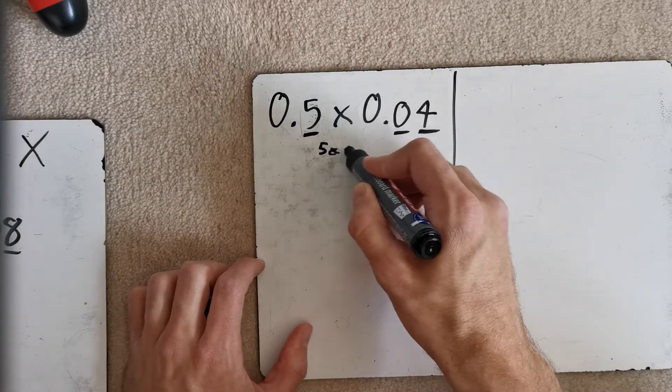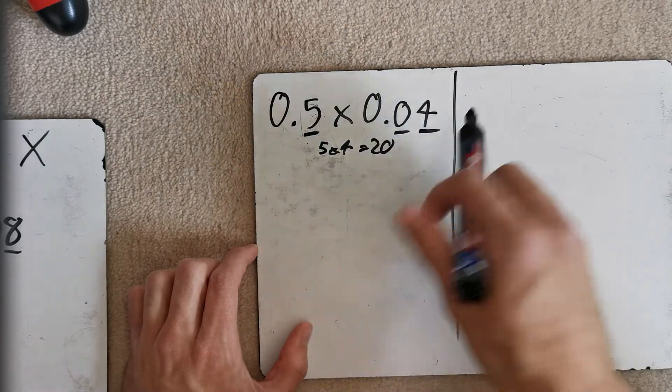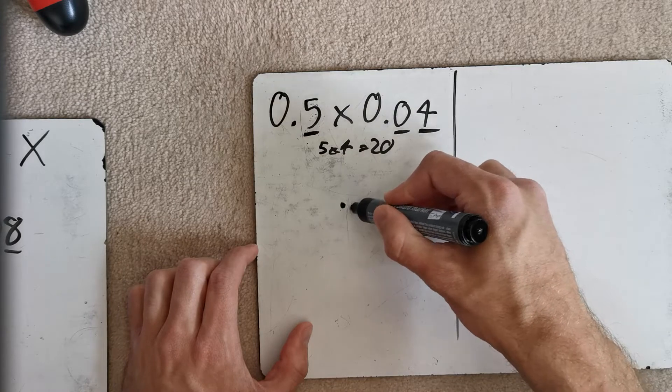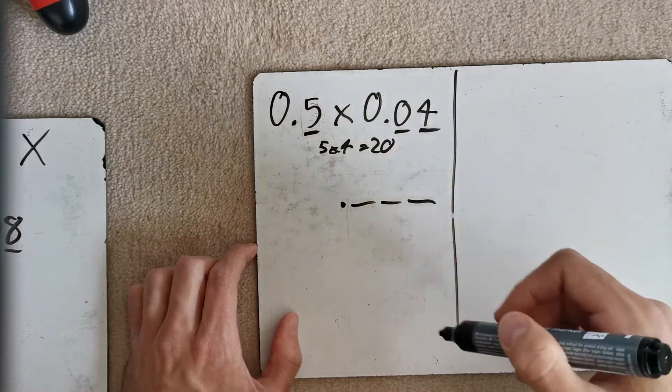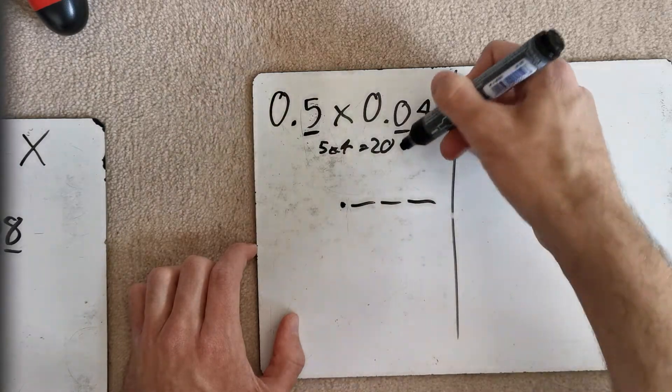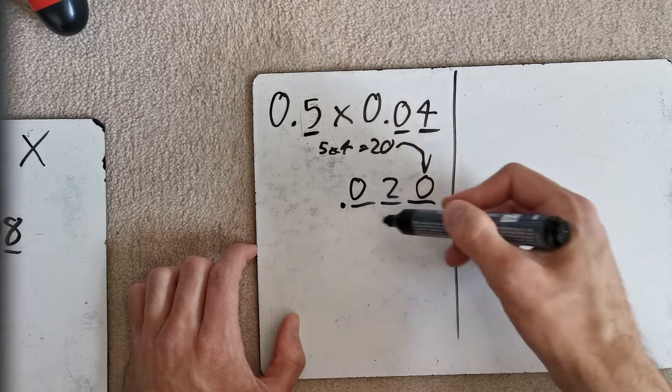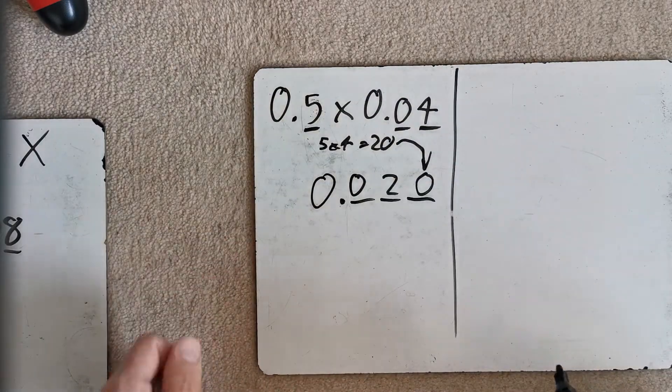So, well, what's 5 times 4? 5 times 4 is 20. And remember, our answer's got 1, 2, 3 decimal places in the question. 1, 2, 3 in the answer. Okay, now 5 times 4, 5 times 4 is 20. Let's stick that 20 in at the end. 0, 2, fill in a blank with 0, fill in that blank with 0 as well.